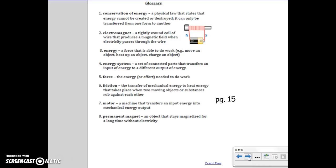Page 15, the Glossary. One, conservation of energy: A physical law that states that energy cannot be created or destroyed. It can only be transferred from one form to another. Two, electromagnet: A tightly wound coil of wire that produces a magnetic field when electricity passes through the wire.